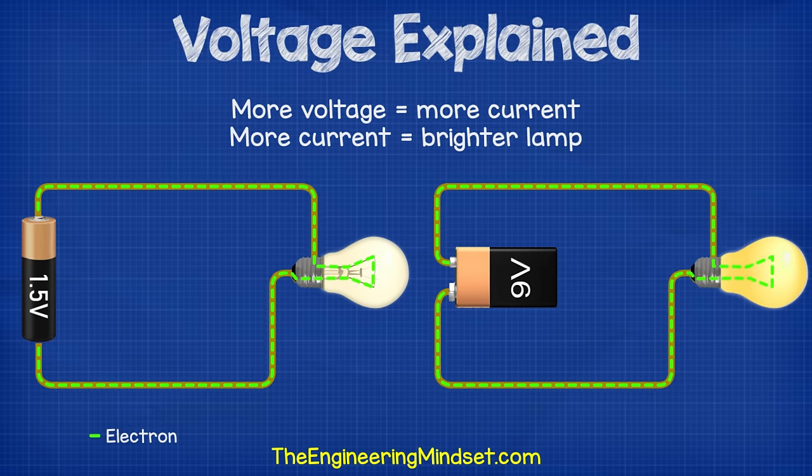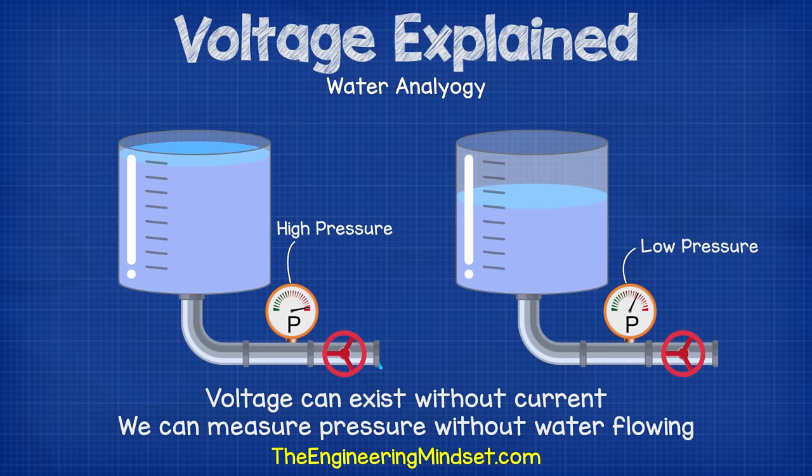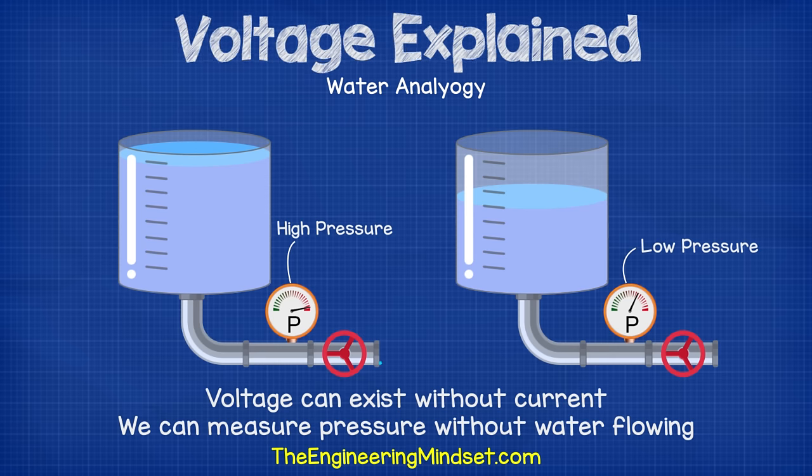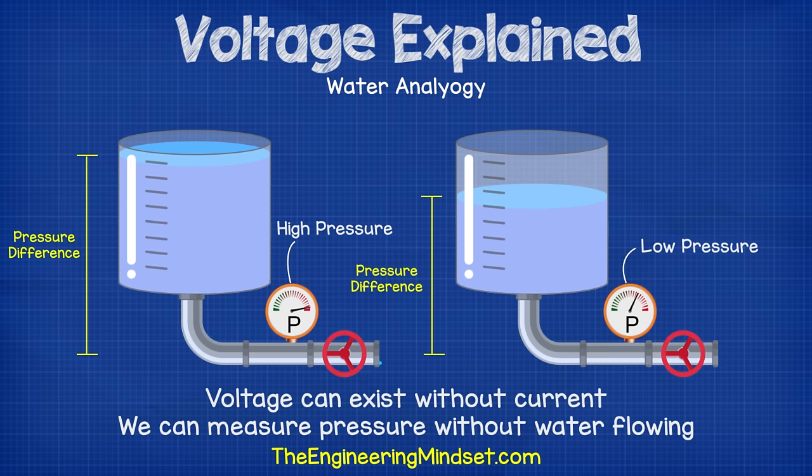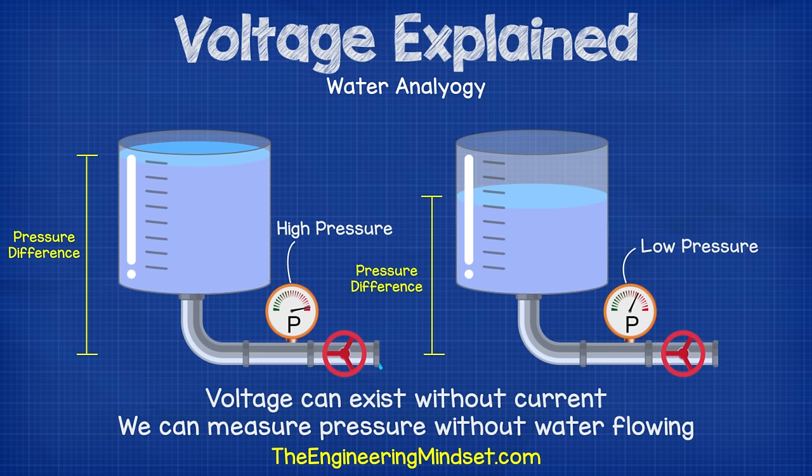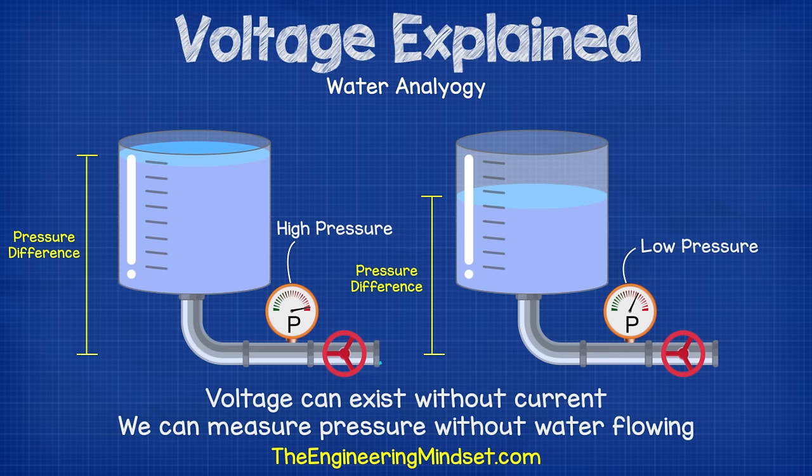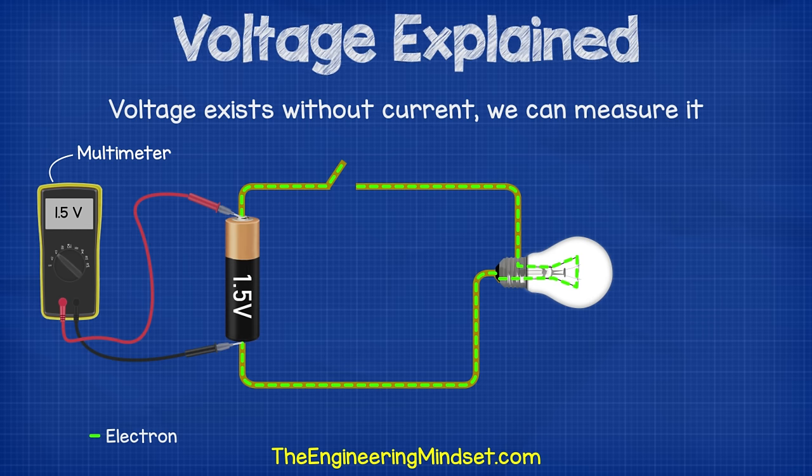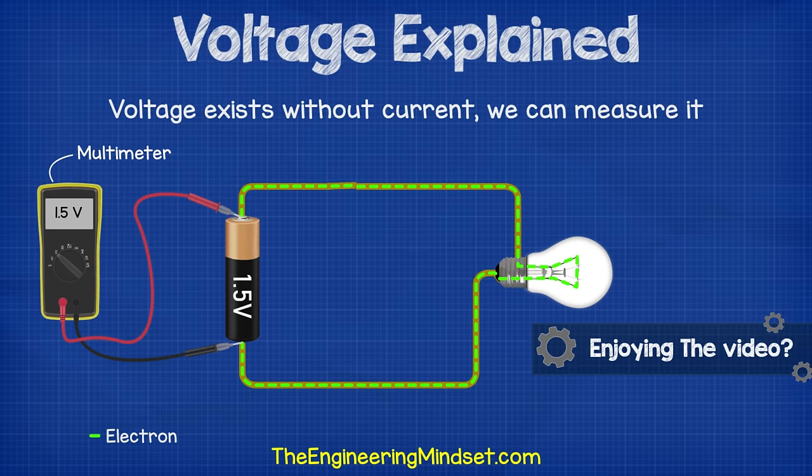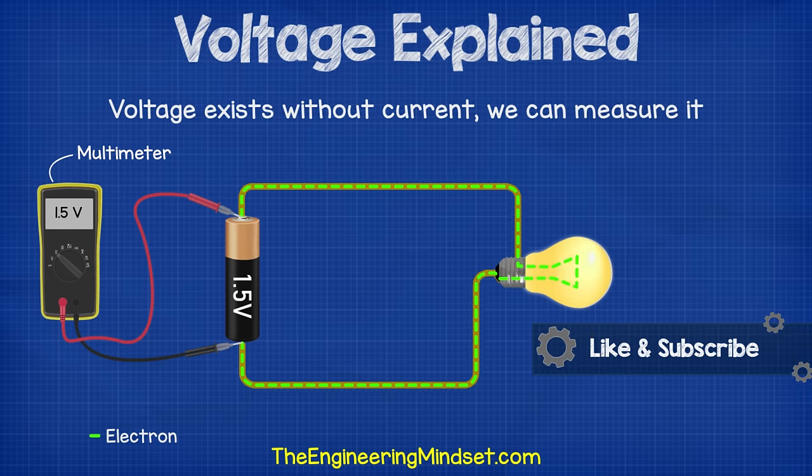Voltage can exist without current. For example, we can measure the pressure in the pipe with the valve shut with no water flowing, and from this, we can tell that the pipe is pressurized. What we're really measuring is the pressure difference between what's inside the pipe compared to the pressure outside. The same thing if we have a battery connected to a circuit with an open switch. The voltage is still present, we can measure that, and as soon as the switch closes, it's going to push the free electrons around the circuit.